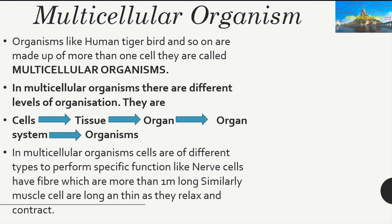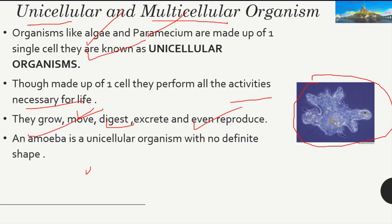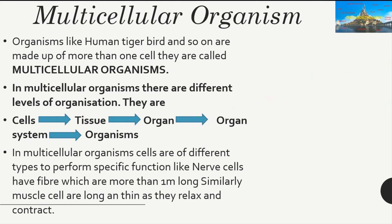Now we come to multicellular organisms. Organisms like humans, tigers, and birds are not made of just one single cell — we are made of many cells. We can be seen with the naked eye, unlike most unicellular organisms. Hence we are known as multicellular organisms — 'multi' means many.